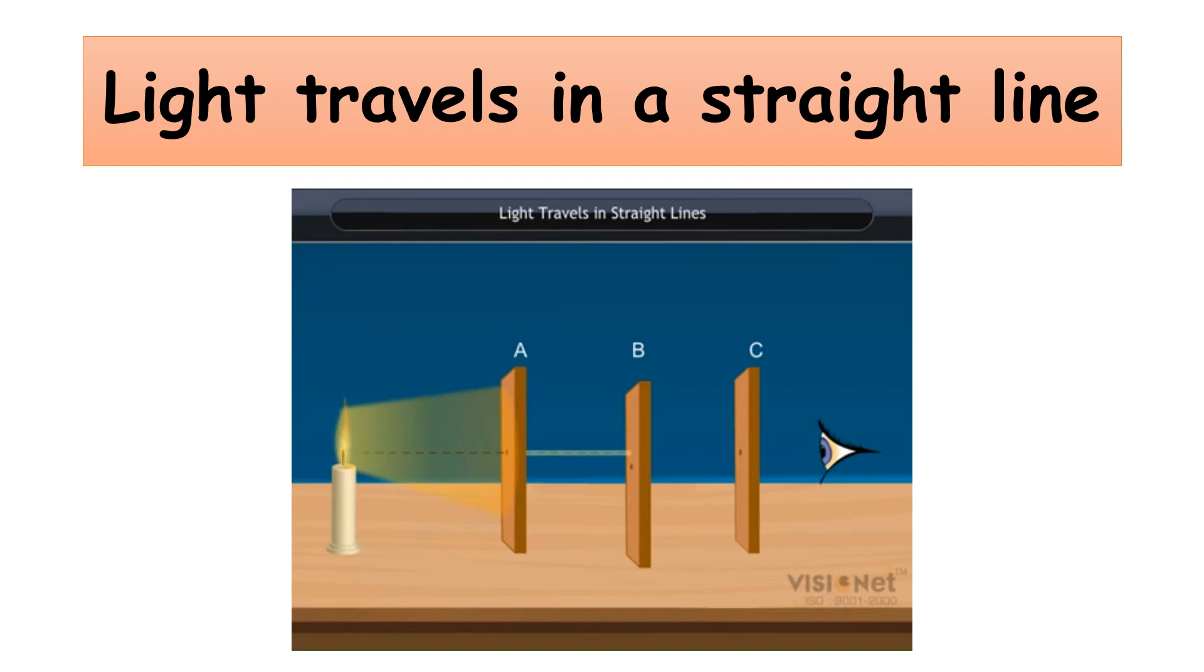Why is the candle flame not visible? It is because light travels in straight lines. Thus, the light passing through the hole of cardboard A cannot bend and then pass through the holes of B and C.